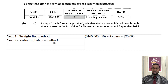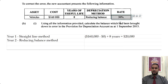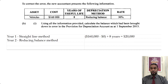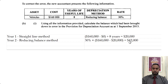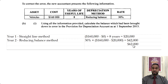Now in year two, they told us the reducing balance method was used on the net book value at the end of year one. How do we calculate depreciation using the reducing balance method? We multiply the percentage by the net book value. To find net book value, we take the cost of the asset — $160,000 — and subtract the depreciation, then multiply. So 30% multiplied by (160 minus 20) which is 140, gives us $42,000. Then we add 20 and 42, which gives us $62,000 — the incorrect depreciation brought down in the depreciation account.